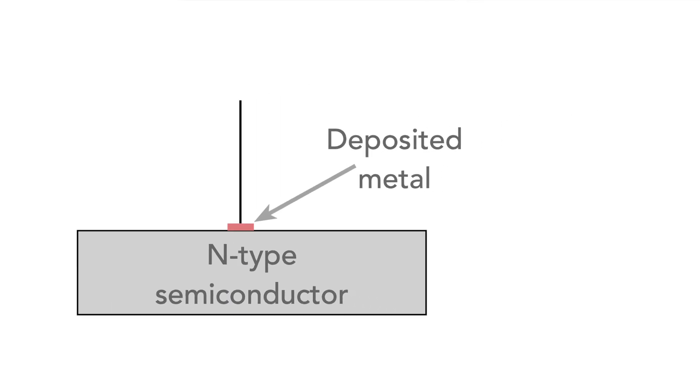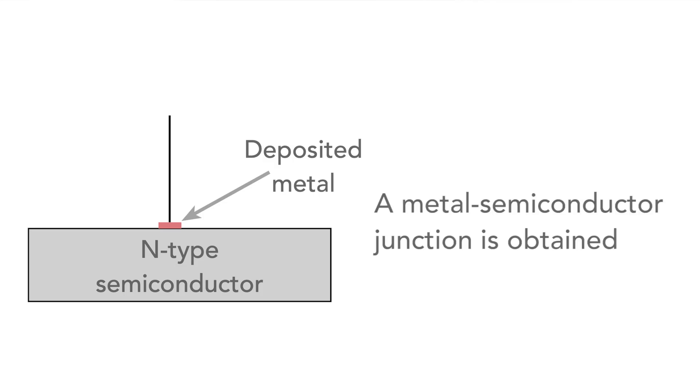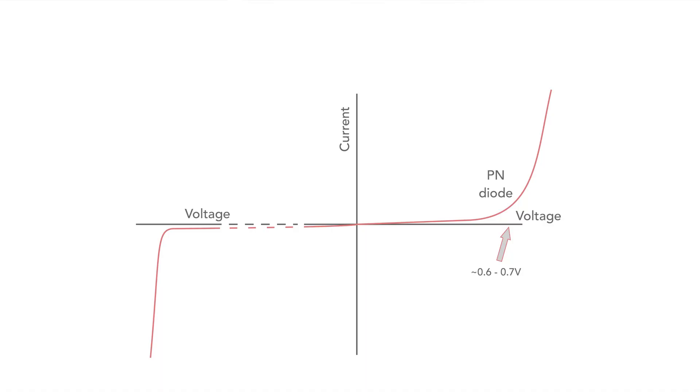Fast forward to the modern day, and effectively the same concept is used, although with much better techniques and technology. A metal is deposited directly onto the semiconductor, giving a metal-semiconductor junction. This structure gives these diodes some major advantages. Their design means they offer a much lower forward voltage drop — typically a turn-on voltage of about 0.2 to 0.3 volts, which is much lower than that for a standard silicon PN junction diode.